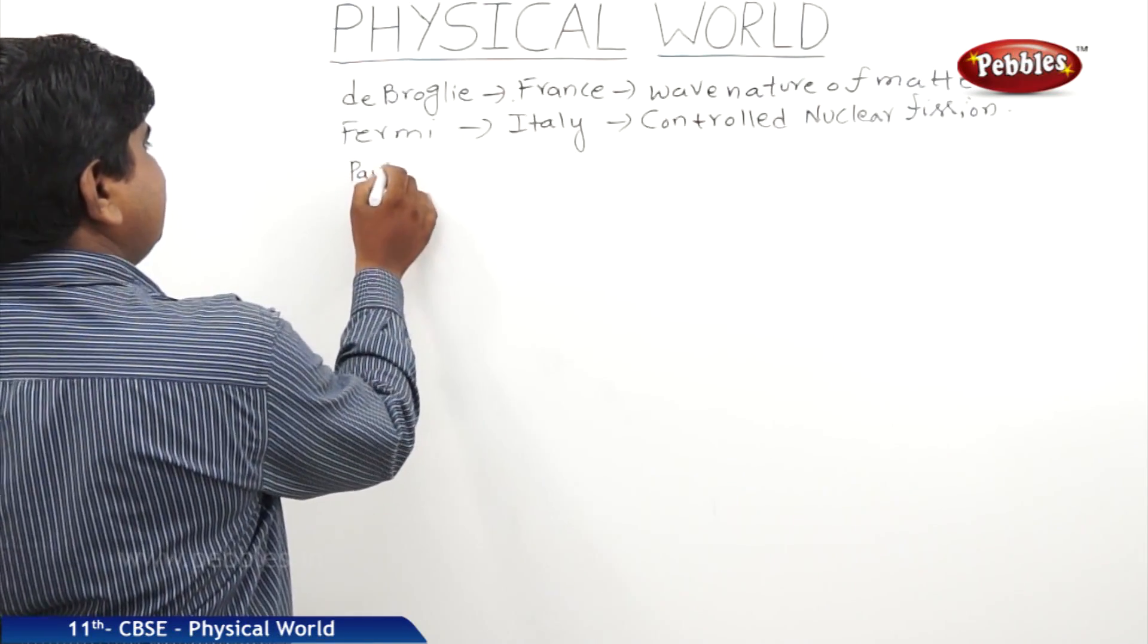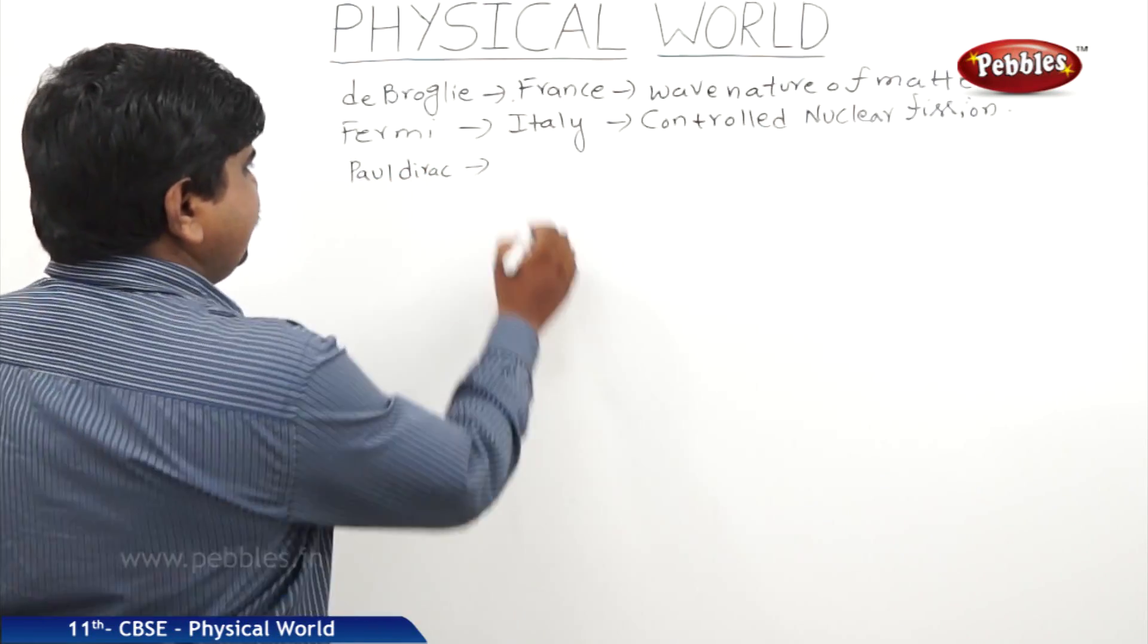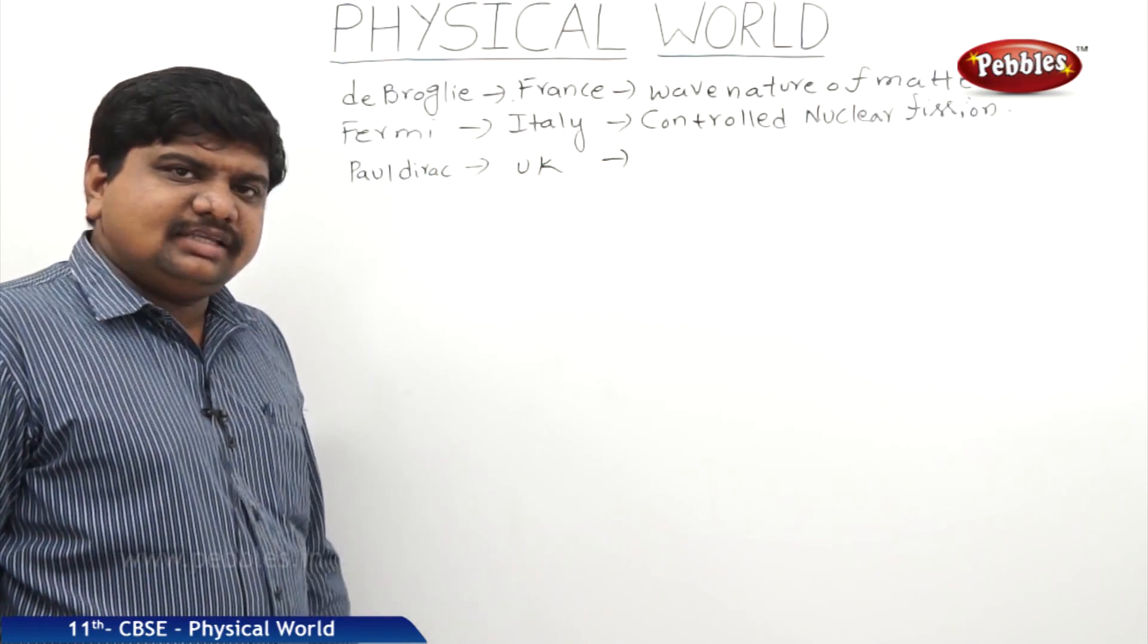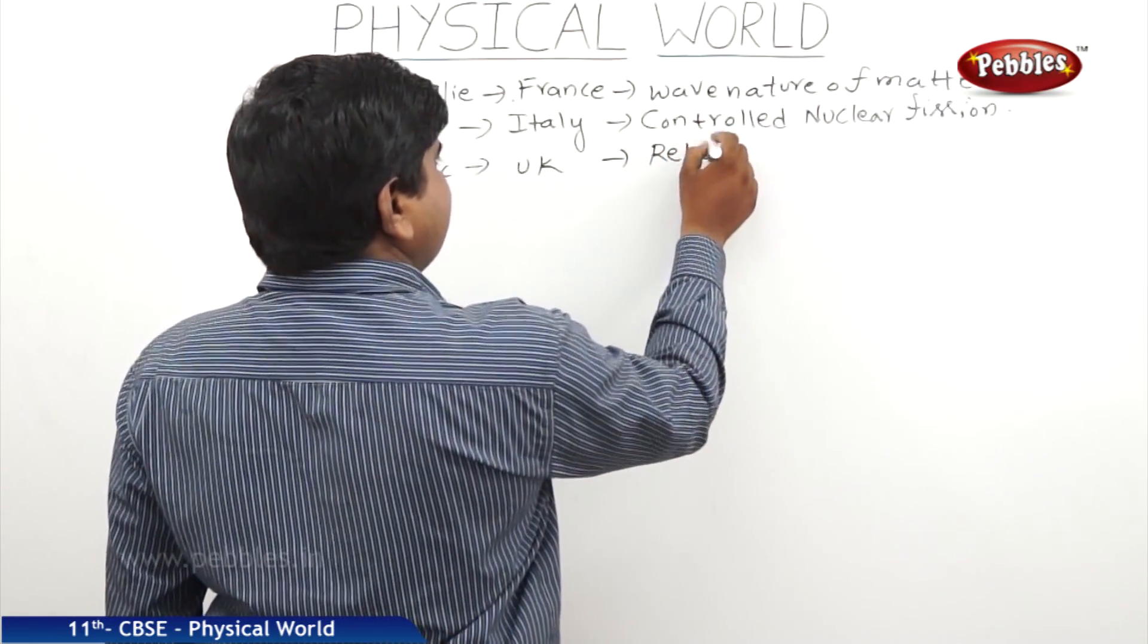The third one is Paul Dirac, he is from UK. He has discovered the relativistic theory of electron.